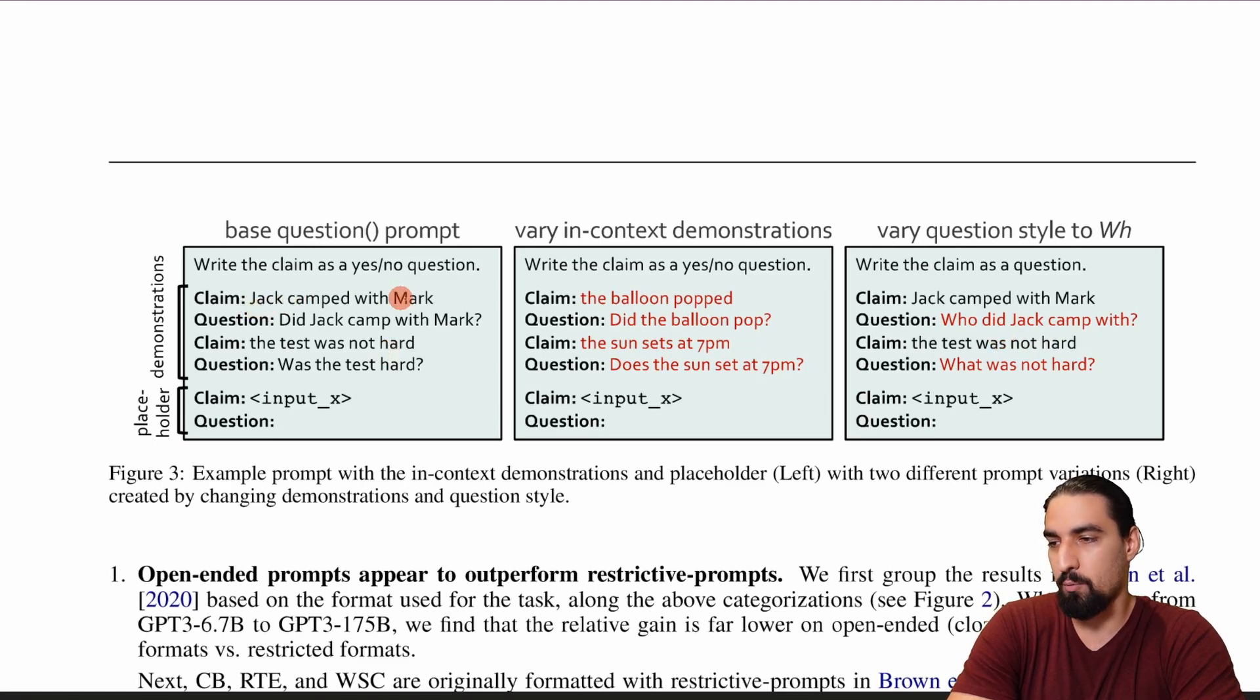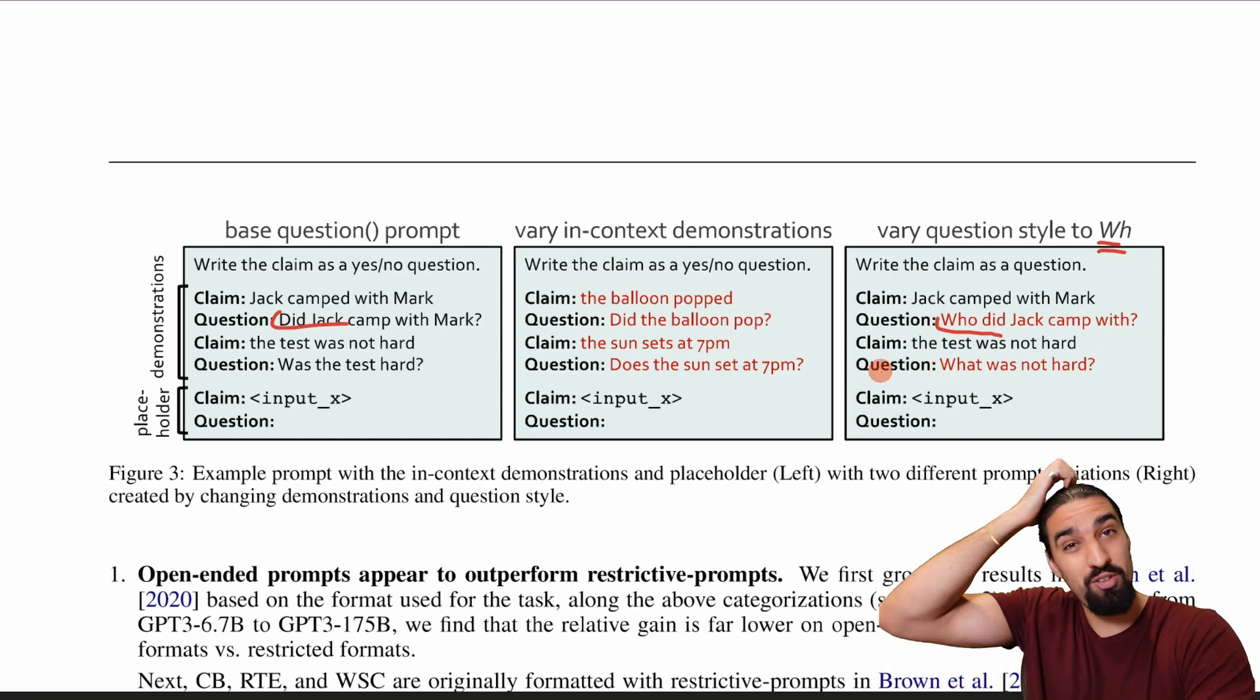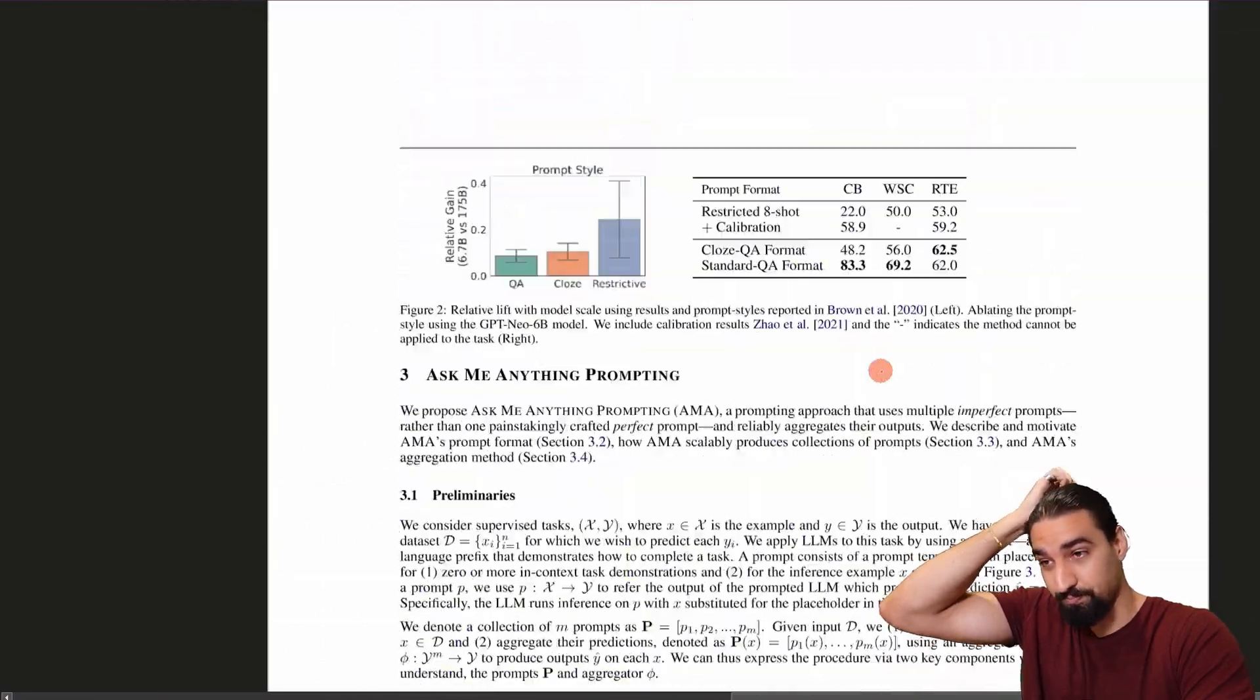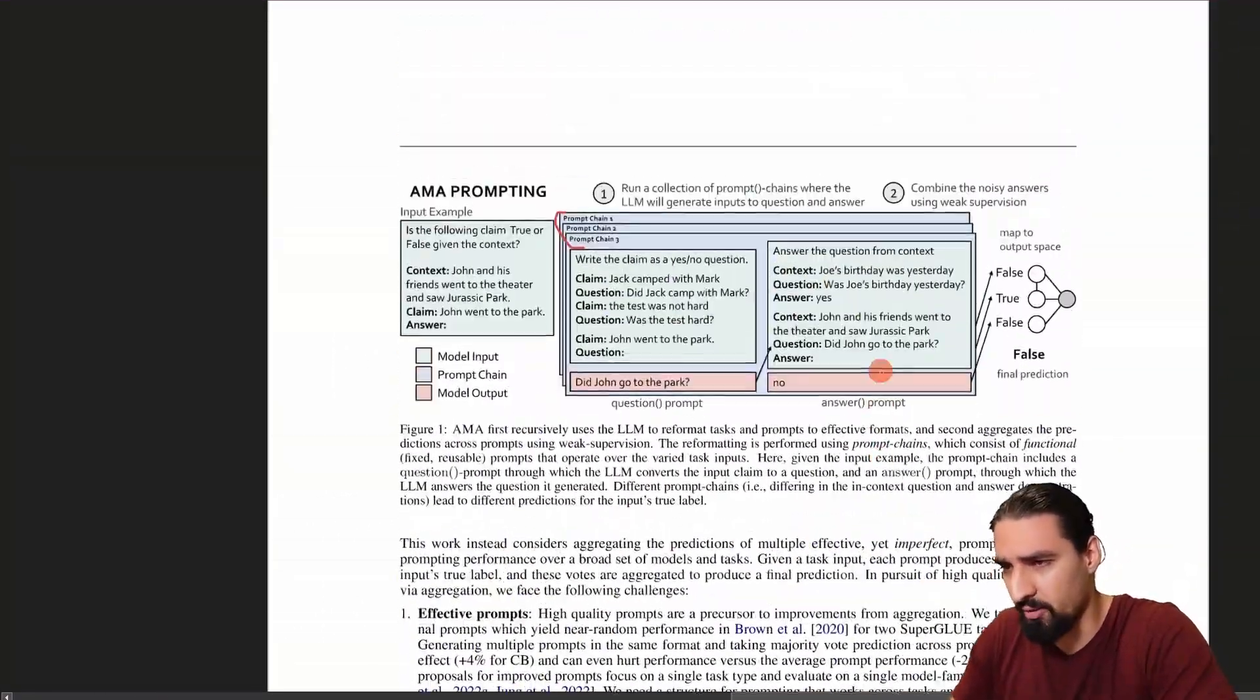So here, Jack camp with Mark, you have did Jack camp with Mark, and instead here, they vary the question style to wh. So the who, what, where, etc questions. As you can see here, they formulate who did Jack camp with, or what was not hard? Okay, so those are some of the variations that each of these chains are going to contain. So now let me go back to the main diagram.